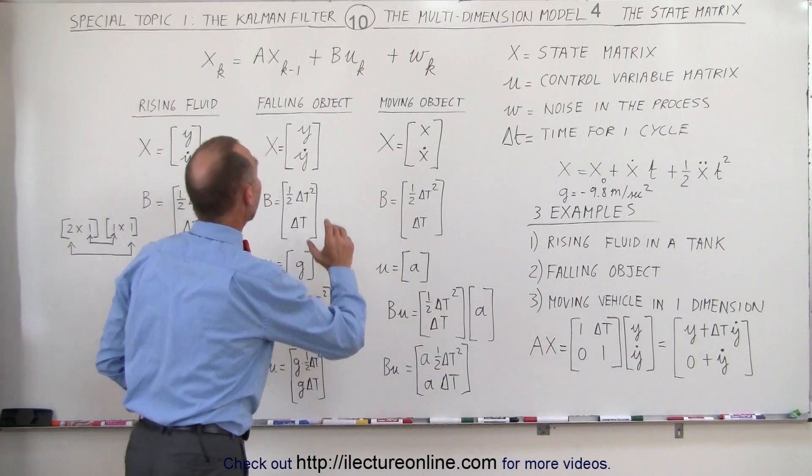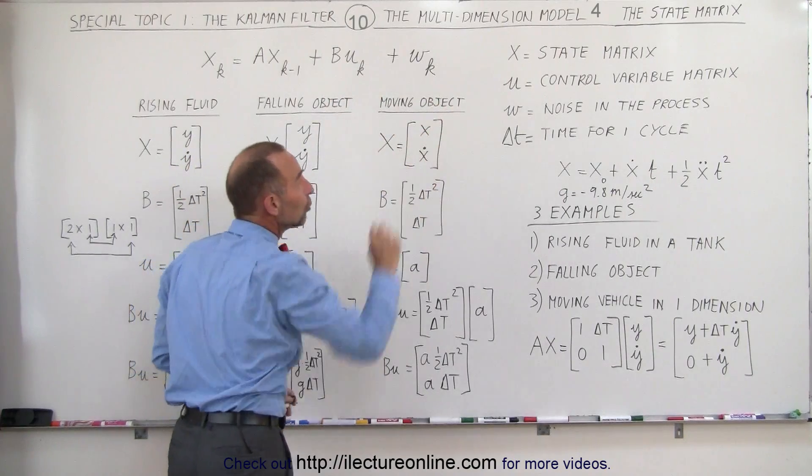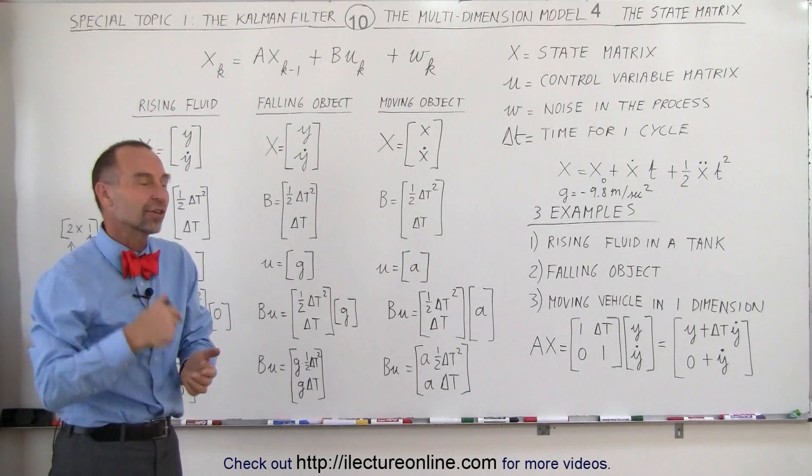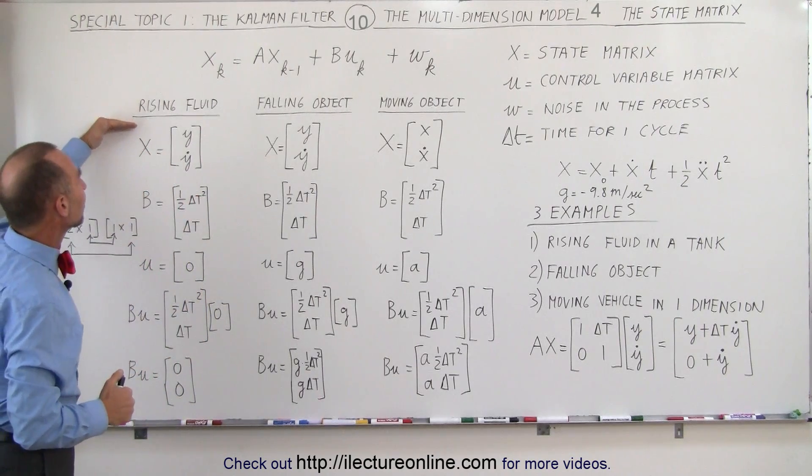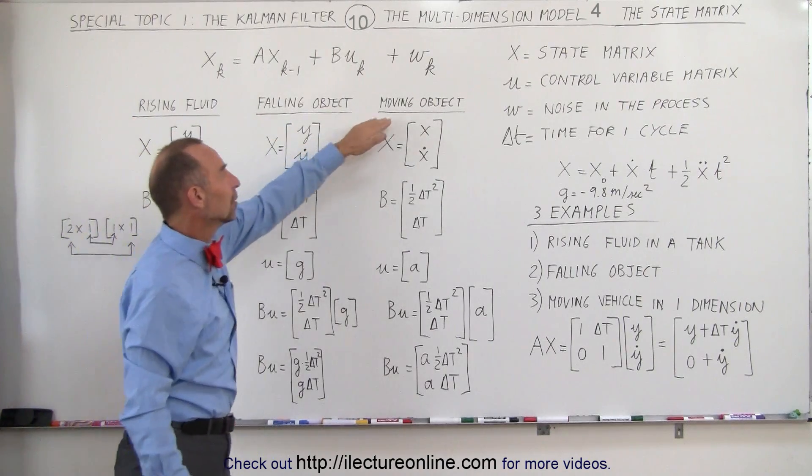And now we're going to add the second term right here, when we multiply the B matrix times U. Remember U is the control variable matrix, which typically represents the acceleration of the object. So here we have the three examples: the rising fluid, falling object, and the moving object.